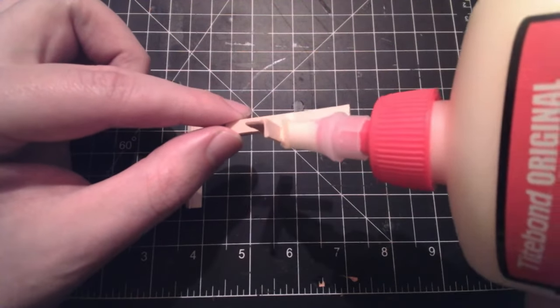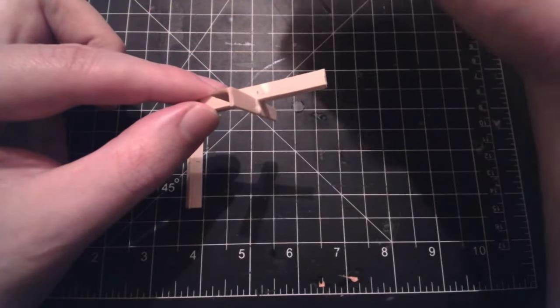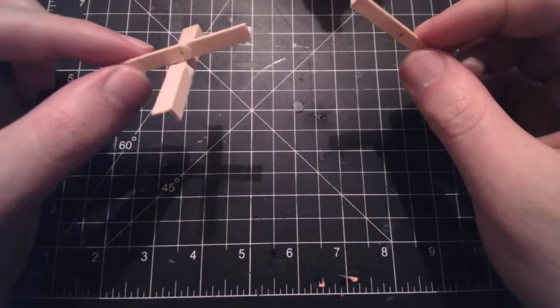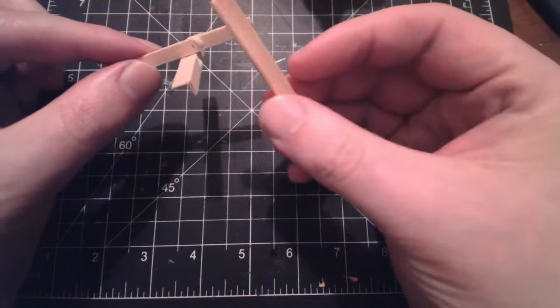Now when you go to put on the third bit, make sure you glue both faces where it's going to go in because you want this to hold both pieces together. Each piece should be sticking to two pieces if you've done this right.